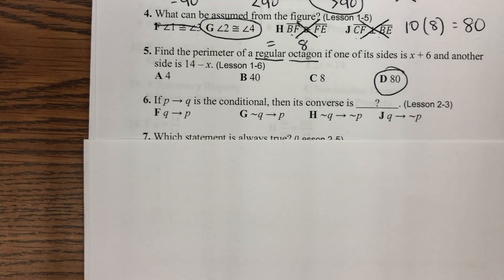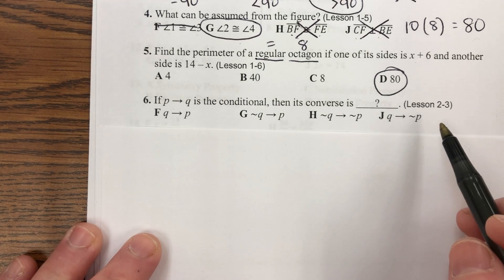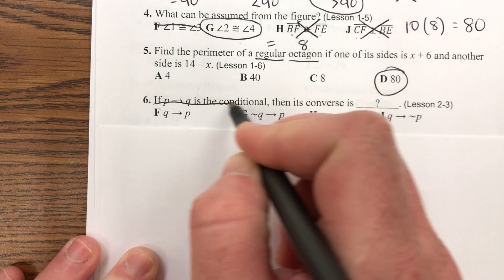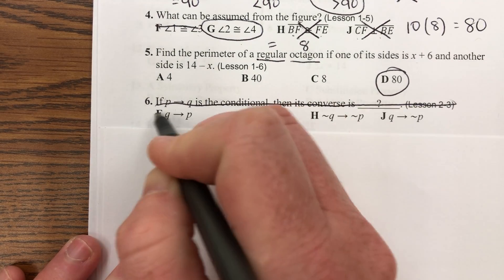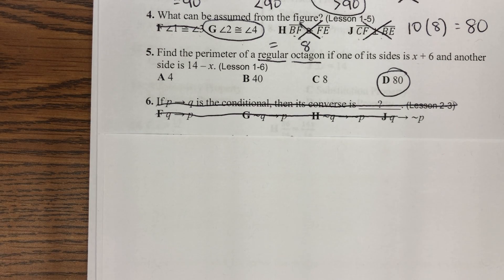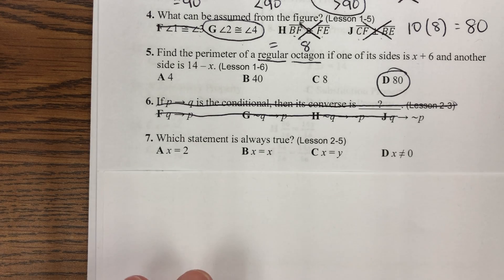Okay, number six. Oh, that's the one we skipped. Sorry, I just hit my phone. We skipped number six. It's from lesson 2-3. We started chapter two in 2-5. This is a conditional statement. You actually should have covered this in your eighth grade math class. So we're going to skip over that one for now and go right to seven.